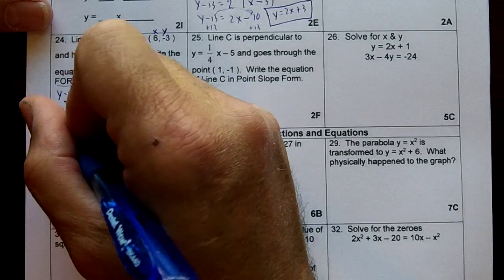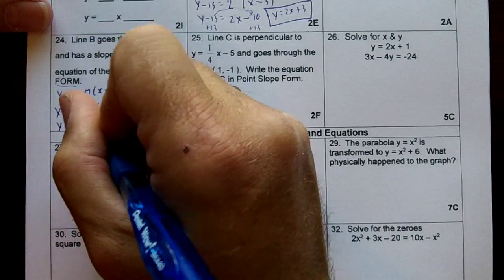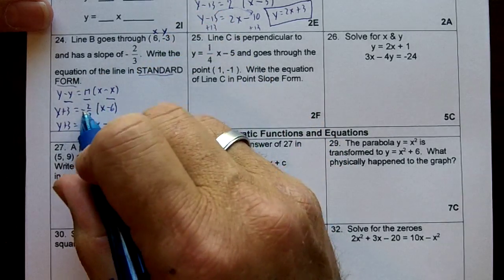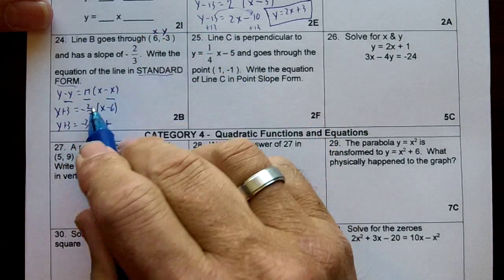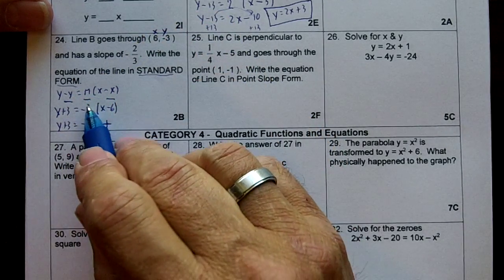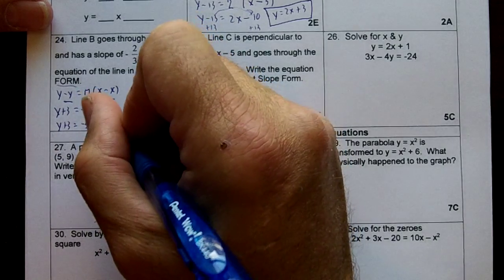So I'm going to have y + 3 equals -2/3x minus, two negatives make a positive, so a negative times a negative is a positive, 2 times 6 is 12, divided by 3 is 4.